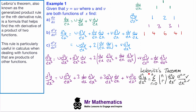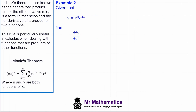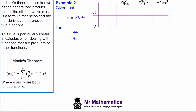In Example 2, we've been given that y is the product of x⁸ and e^(2x) and we've been asked to find the third derivative using Leibniz's theorem. So if u = x⁸, the first derivative is 8x⁷, the second derivative is 56x⁶, and the third derivative is 336x⁵. And if v = e^(2x), the first derivative is 2e^(2x), the second is 4e^(2x), and the third is 8e^(2x).